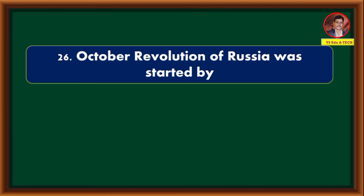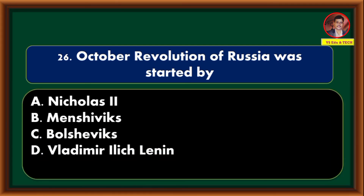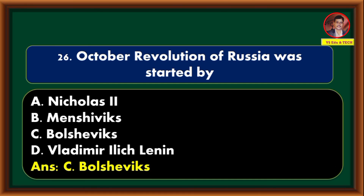The October Revolution of Russia was started by — Nicholas 2nd, Mensheviks, Bolsheviks, Vladimir Ilyich Lenin. Correct answer is option C: Bolsheviks.